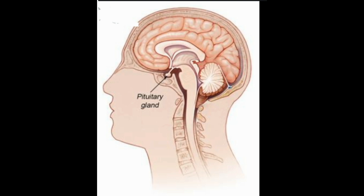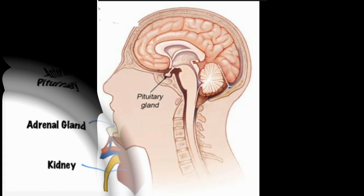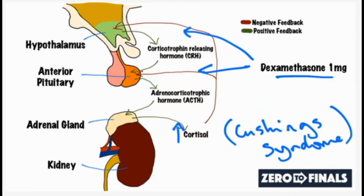Pituitary adenomas are benign tumors of the pituitary gland that secrete increased amounts of ACTH, causing excessive cortisol production. Most patients have a single adenoma. First described in 1912 by neurosurgeon Harvey Cushing, MD, Cushing's disease is the most common cause of spontaneous Cushing's syndrome, accounting for 60 to 70 percent of all cases.